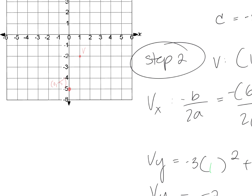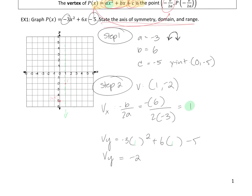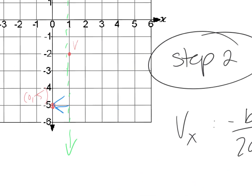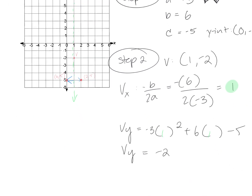We need to find the third point using the axis of symmetry. Parabolas are symmetric straight down through the vertex. There's a line that goes straight through the vertex called the axis of symmetry. If there is a point one unit away from the axis of symmetry on one side, there must be another point exactly one unit away on the other side. By the axis of symmetry, we know the point (2, negative 5) exists. The axis of symmetry is the line x equals 1.